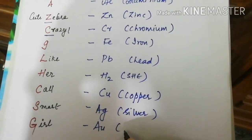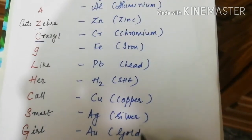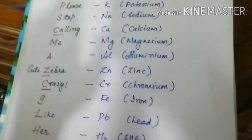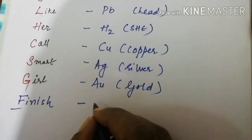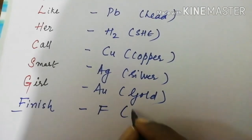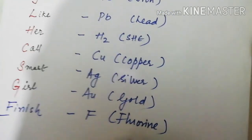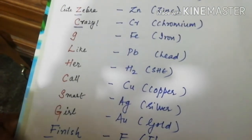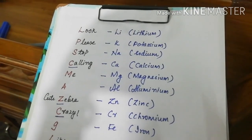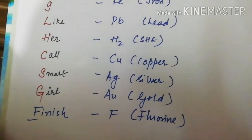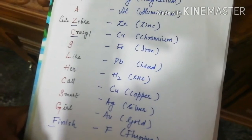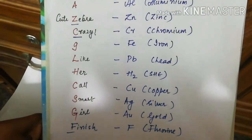G stands for gold. So the mnemonic 'Please stop calling me a cute zebra, crazy, I like her called smart girl' helps us remember the order of elements in the electrochemical series from lithium to gold.